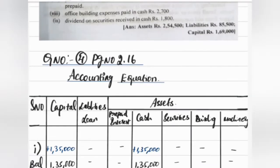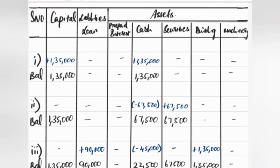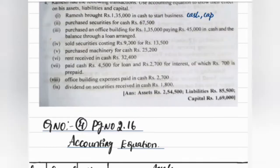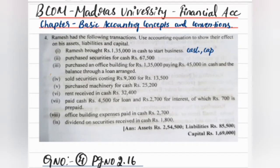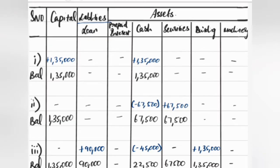So basically, capital and liabilities on one side, and assets on the other. Under liabilities we get loan, and under assets we are getting 5 different things: prepaid interest, cash, securities, building, and machinery. For the first point, if you have ₹1,35,000 brought in cash, then cash is ₹1,35,000 and capital is ₹1,35,000.